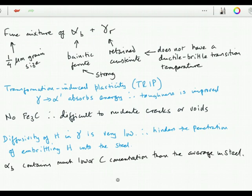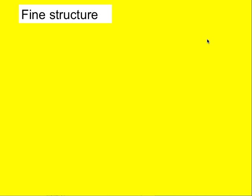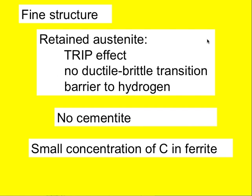Carbon in ferrite tends to embrittle the ferrite, so this is also a good thing. Let us see whether this leads to very good properties. We have apparently an ideal mixture of phases: a fine structure, retained austenite which gives us a TRIP effect, no ductile-brittle transition associated with the austenite. It acts like a composite material in which we have a tough phase and a strong phase. It is a barrier to hydrogen penetration into the steel, and there is no cementite to nucleate voids or cleavage cracks. We also have very little carbon left in the ferrite.